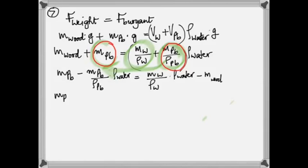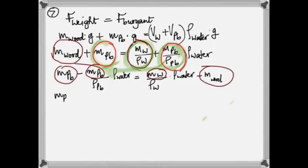Mass of lead is taken out, so you have 1 minus density of water by density of lead. Same thing on the right side. That's just math. I just brought these two together, put one underneath the other. And I took lead outside, so that's 1.